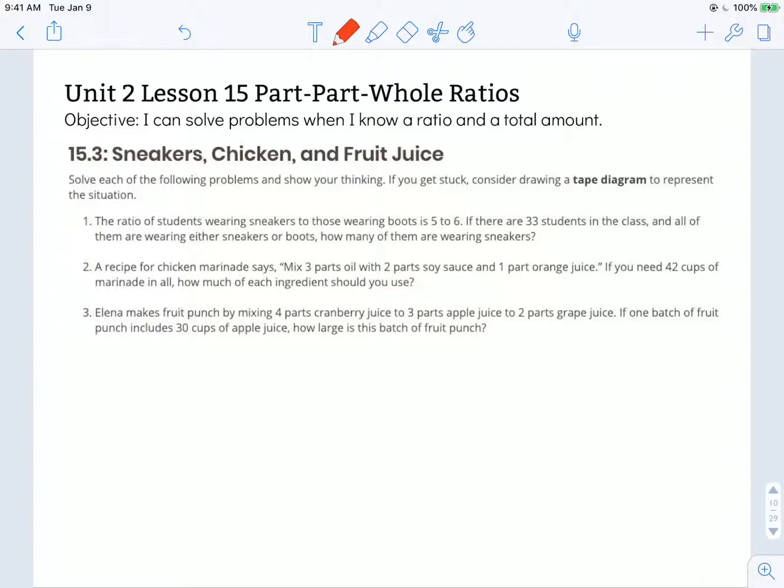Number 1 says, the ratio of students wearing sneakers to those wearing boots is 5 to 6. So I'm going to go ahead and draw a tape diagram of this. So we have sneakers and boots. So I have 5 sneakers, so I'm going to draw 5 rectangles to represent the number of sneakers, and then I have 6 boots.